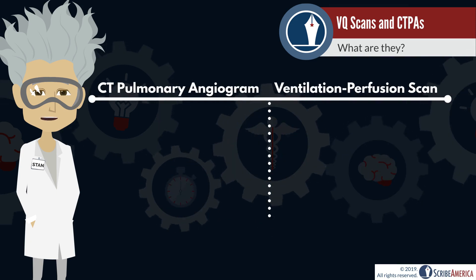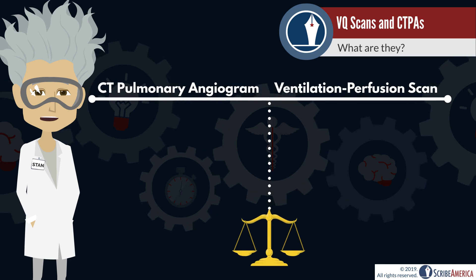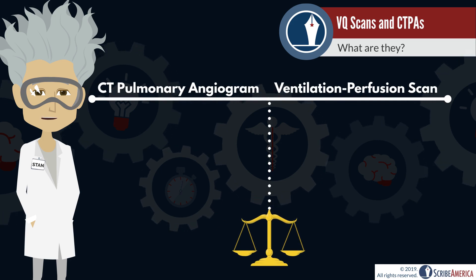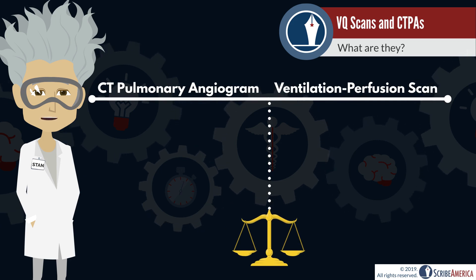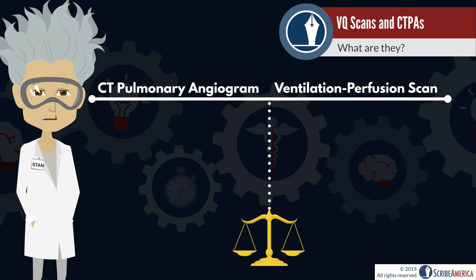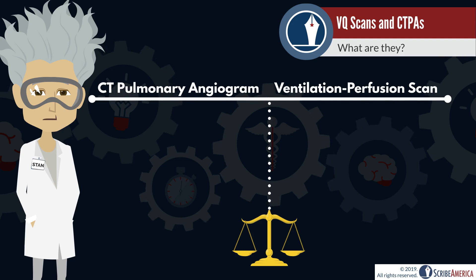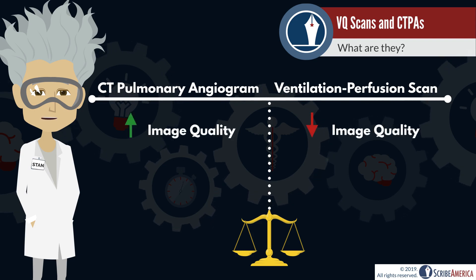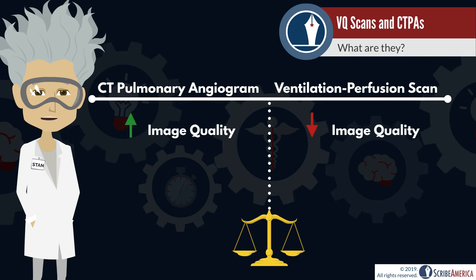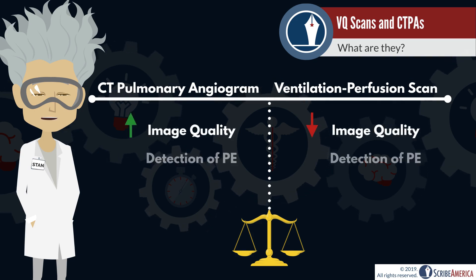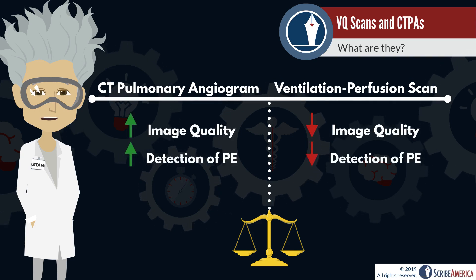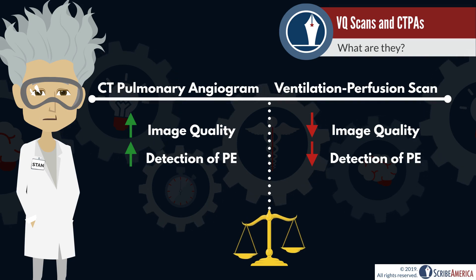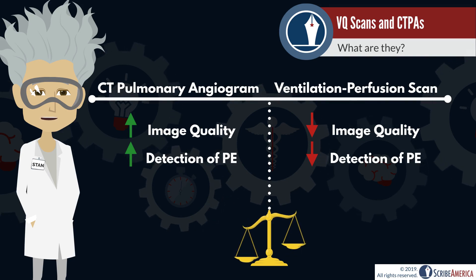With the two scans defined, let's talk about the advantages and disadvantages of each. CTPAs provide much better images and are widely considered to be the most reliable test for the diagnosis of a pulmonary embolism. Case closed — let's do away with the VQ scan, right? Not so fast.